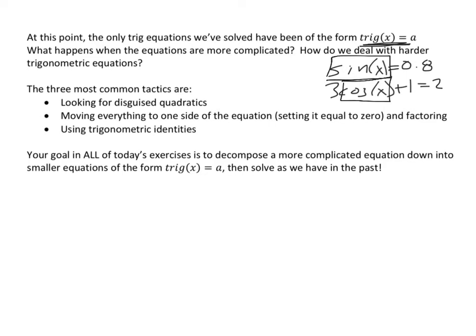The three most common tactics are: first, look for disguised quadratics and factor; second, move everything over to one side of the equation and factor — factoring is a really powerful tool; and third, use trigonometric identities, and probably factor after that. There is one more thing we'll cover near the end of the video: how to deal with trig functions that have something different in the argument. Our goal in all of today's exercises is to decompose a more complicated equation down into smaller equations of the basic form.